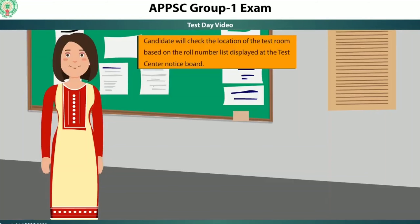The candidate will check the location of the Test Room based on the roll number list displayed at the Test Center Notice Board.